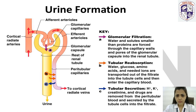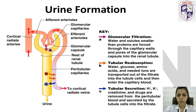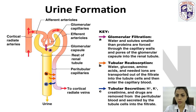The semi-permeability allows the blood to be filtered and allows only small molecules to be filtered — such as water molecules, some hormones, uric acid, and urea. Large molecules like plasma proteins and blood cells will not be filtered by the glomerulus. The fluid we get into the Bowman's capsule is called the filtrate. Water and solutes smaller than proteins are forced through the capillary walls and pores of the glomerular capsule into the renal tubules.